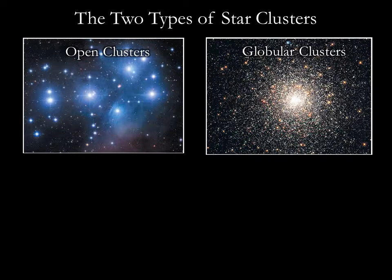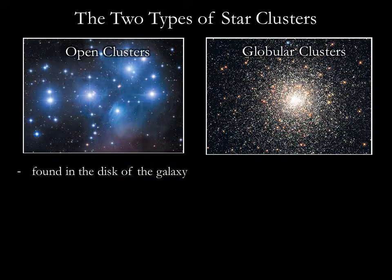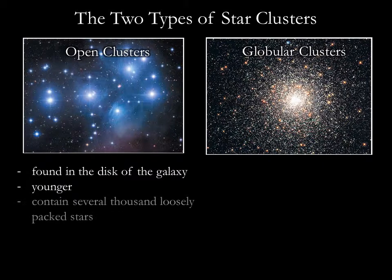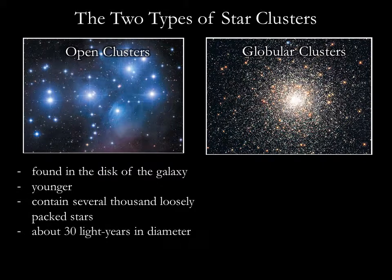There are two basic types of star clusters: the modestly sized open clusters, and the densely packed globular clusters. Open clusters are found in the disk of our galaxy and tend to be young in age. They can contain up to several thousand stars and typically are about 30 light years across.